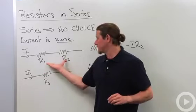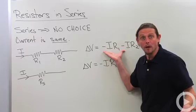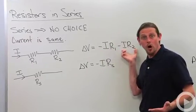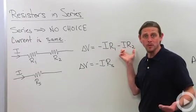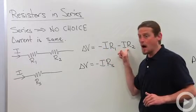All right, so what is the potential difference here? Well, it's going to be the potential difference across R1 plus the potential difference across R2. Ohm's law tells us that that's minus IR1 minus IR2.